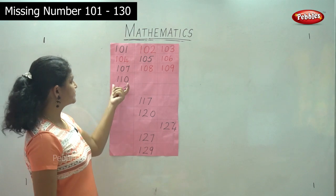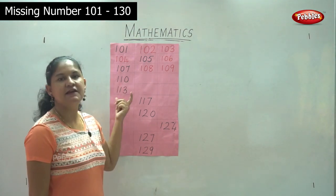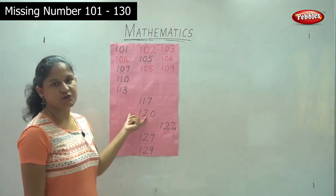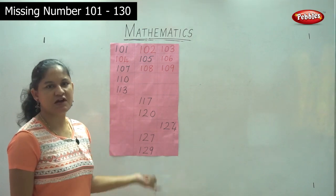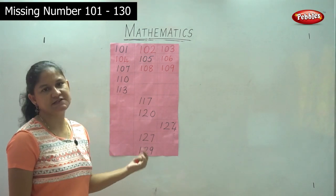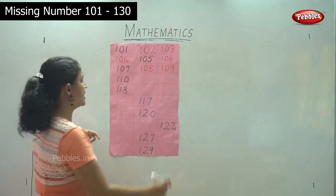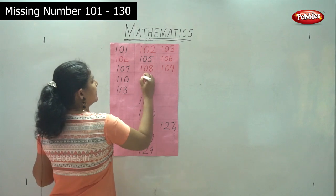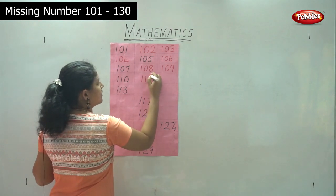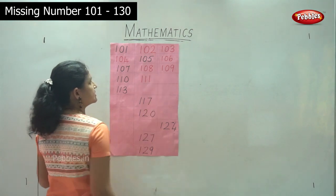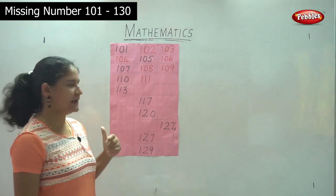Next we have 110. We want to know what is the next number — after 110, it is 111. So 1, 1, 1 is 111.